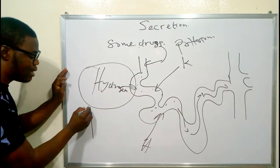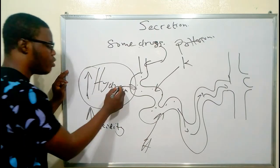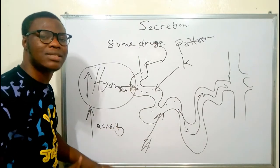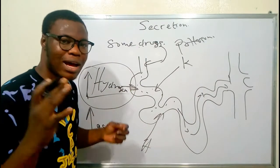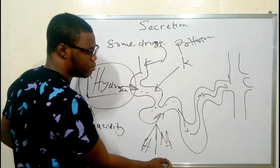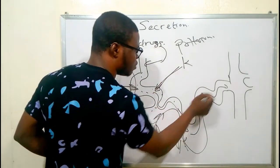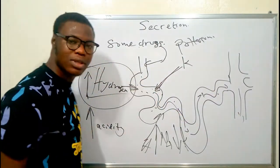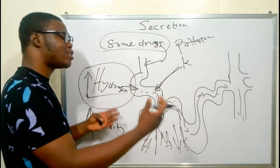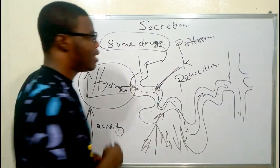When the body's acidity is high, there is an increase in the secretion of hydrogen, because the body wants to reduce its acidity. Regarding potassium: as sodium is being reabsorbed back into the bloodstream, potassium is excreted and passes out through the collecting duct. For drugs, not all drugs are secreted, but drugs such as penicillin find their way out through the urine. That is secretion.